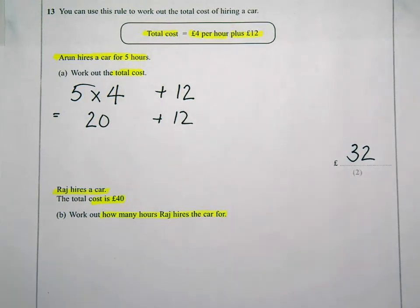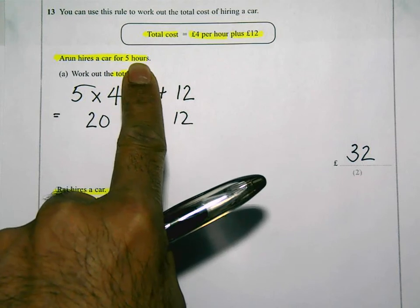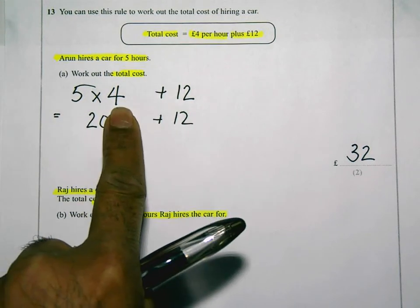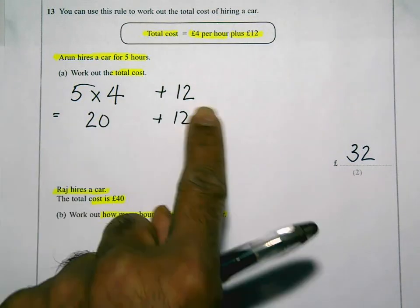So we basically need to work backwards. What we did before was the number of hours, we times by four and then added on twelve. So I need to do that in opposite order.